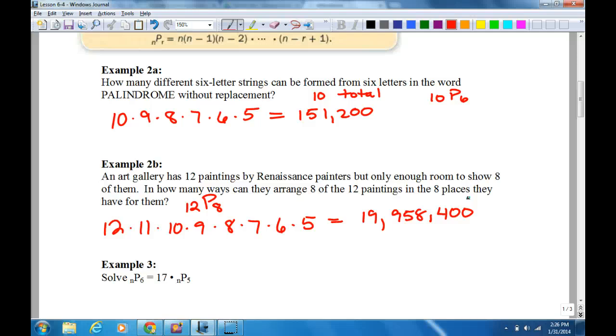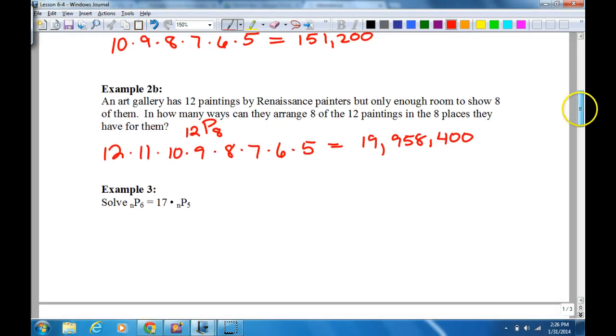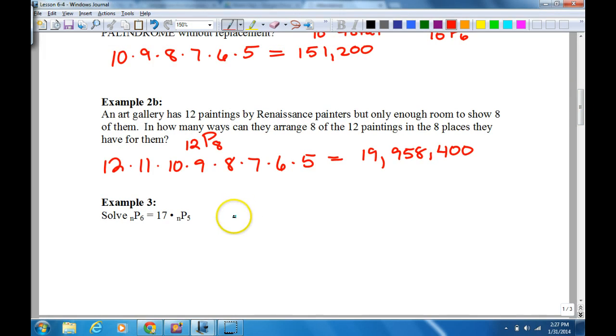Example three is interesting, because we are trying to solve for n in this case. We don't know what n is. I'm going to have, notice that nP6 equals 17 times nP5. So what I'm going to actually do is I'm going to solve for 17, get 17 by itself. This is different a little bit, but you'll see why I do it in a minute. So I'm going to have nP6 divided by nP5 equals 17.